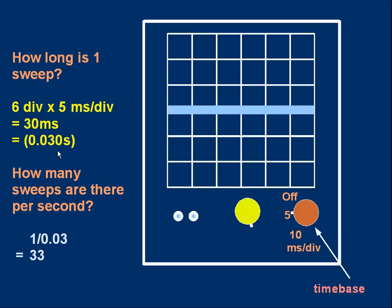How many sweeps are there per second? Well, how many 30 milliseconds are there in a second? We've just got to divide one second by 0.03. And to two significant figures, it's 33. So each sweep occurs and instantly the next sweep occurs. And that happens 33 times each second, giving the illusion of a continuous line. But it's actually the spot moving across very quickly.